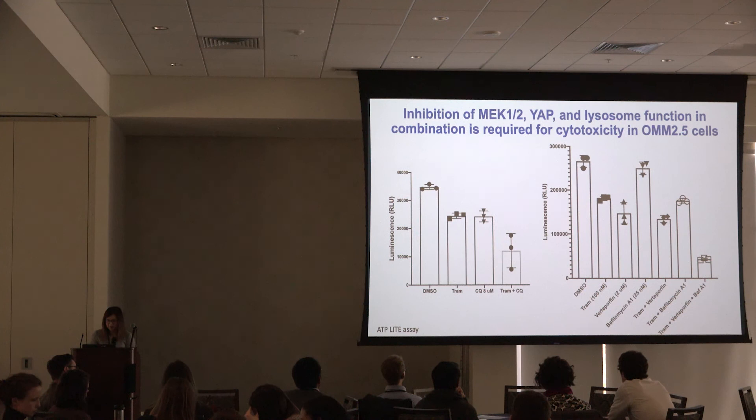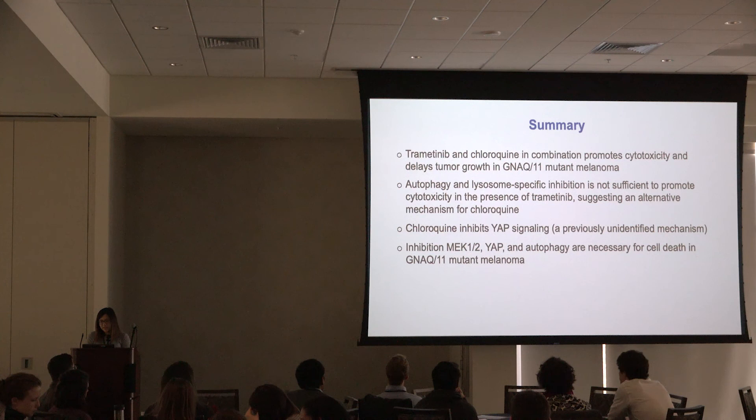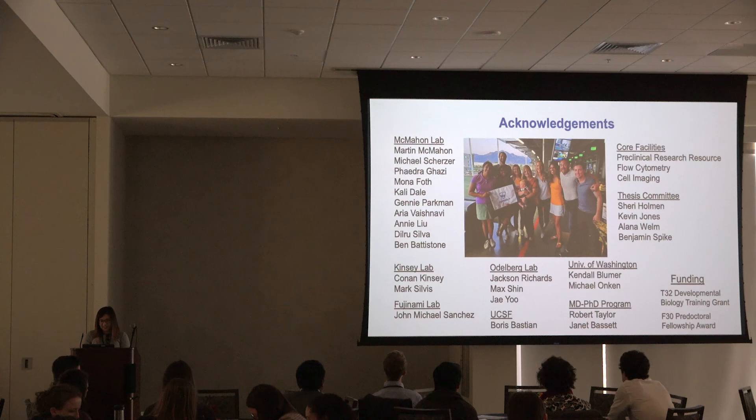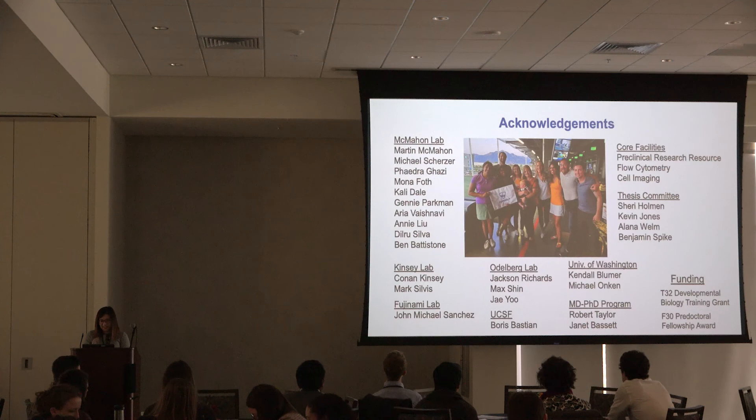In summary, in GNAQ and GNA11 mutant melanoma, trametinib and chloroquine has the potential to be an effective treatment strategy, as shown in vitro and in vivo. This is due to the requirement of trametinib inhibiting MEK, and chloroquine inhibiting both YAP signaling and autophagy. Thank you — I am happy to take any questions.